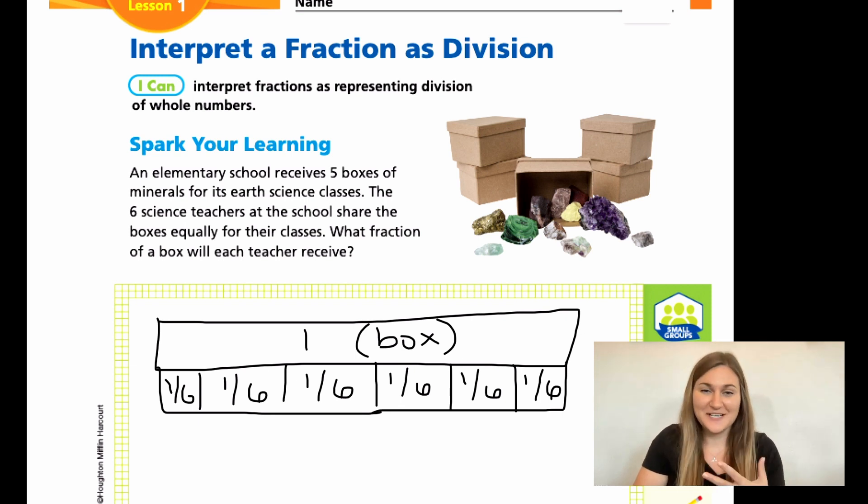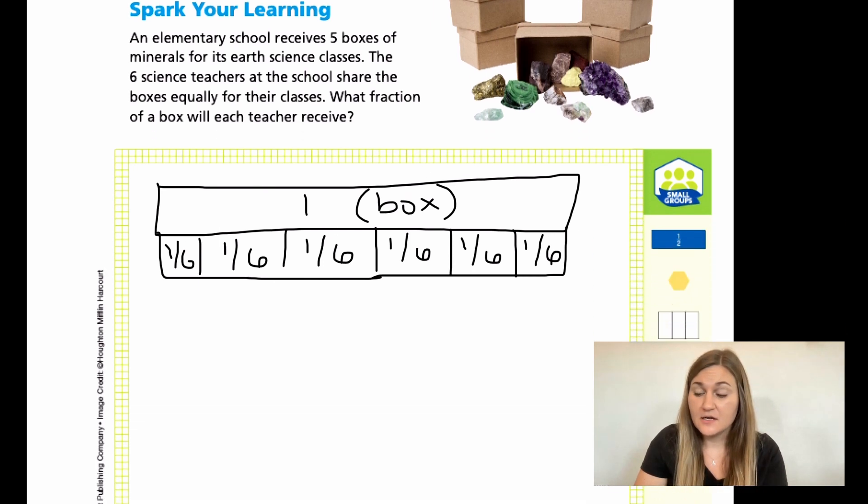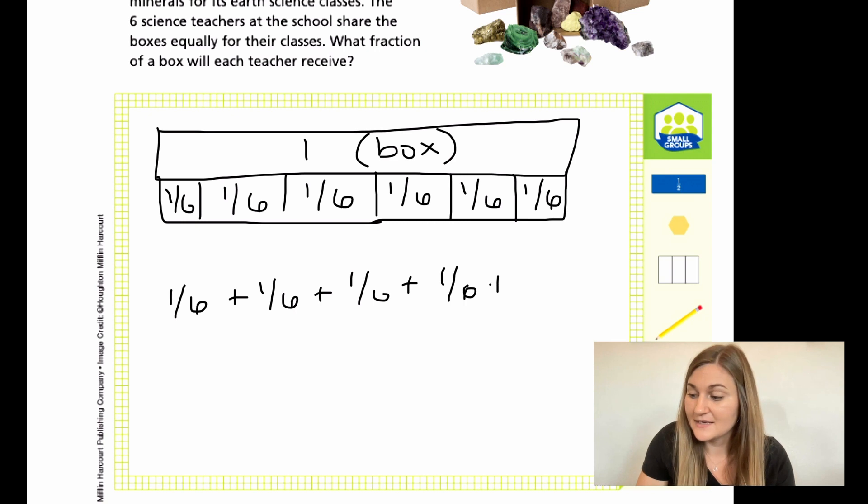So if I'm a teacher, which I am, I get one sixth of one of the boxes, but there's five boxes. So if I have one sixth of the first box and then another sixth of the second box and of the third box and of the fourth box and finally of the fifth box, how much of the boxes do just I have? Well, I have five sixths of the total amount of the five boxes.